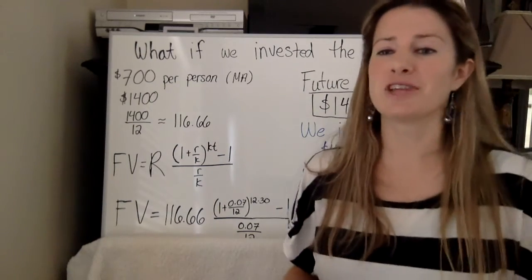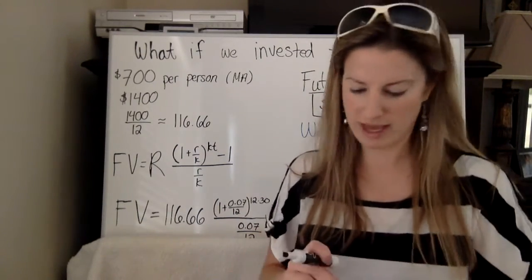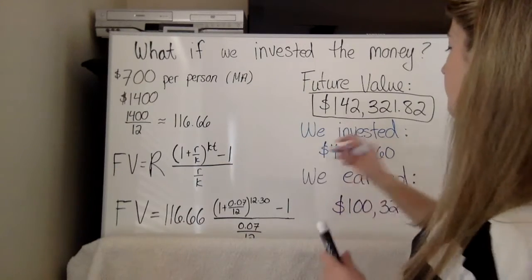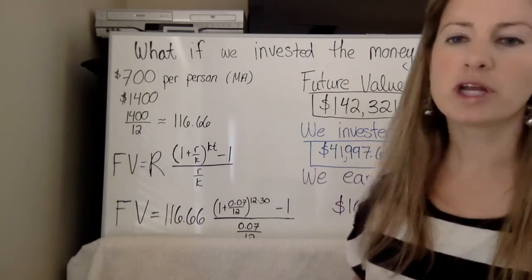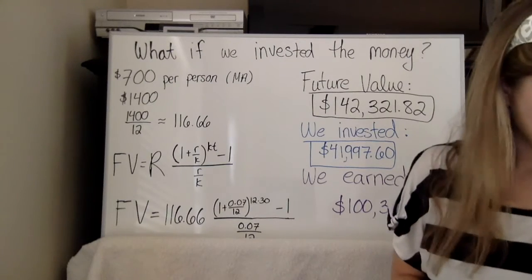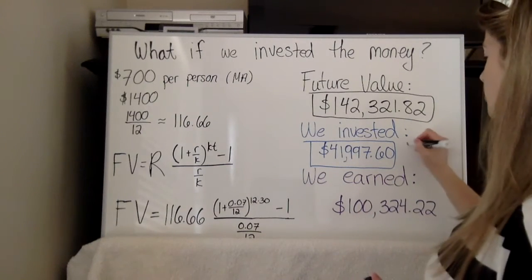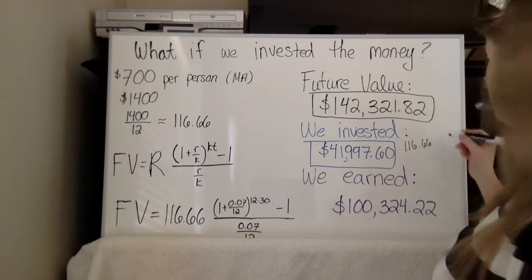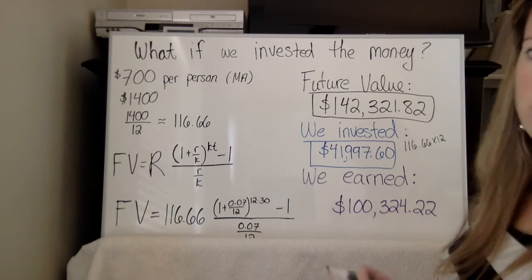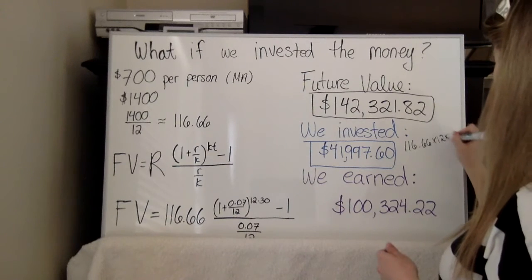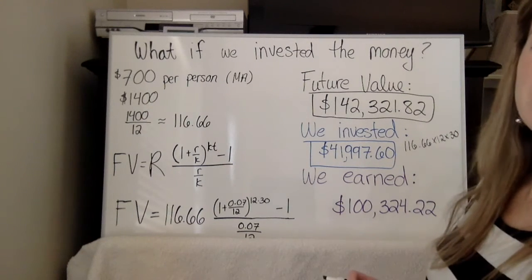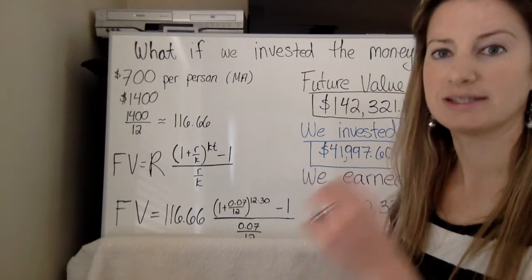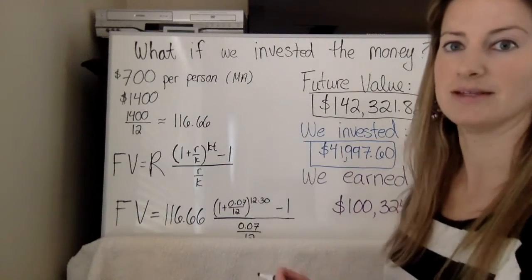So in the end, our future value is look at this $142,321.82. That's insane. Now I know what you're saying. You're saying, well, some of that money's mine that I put in. Yeah, that is completely true. It is. So how much did you put in? Well, we invested $41,997.60. And if you're wondering how I got that, I just took the 116.66 that we invested times 12, because we're investing 12 times a year times 30, because it's 30 years.